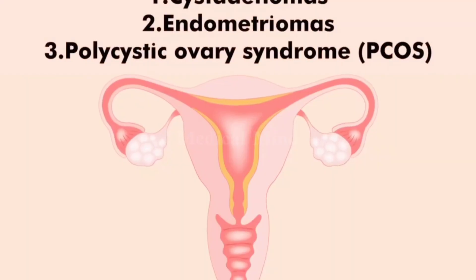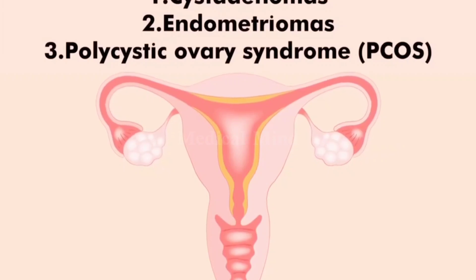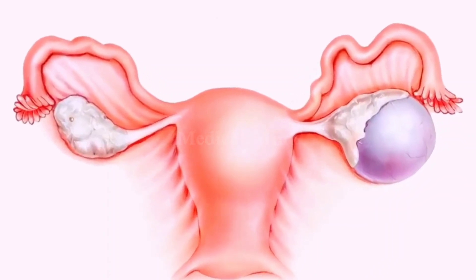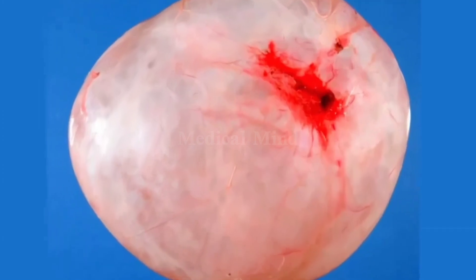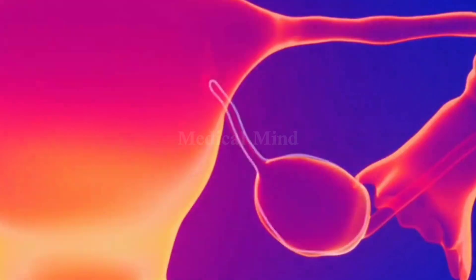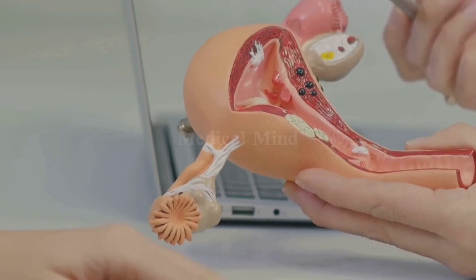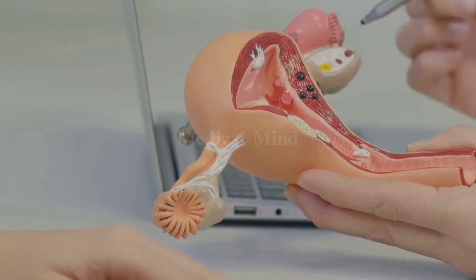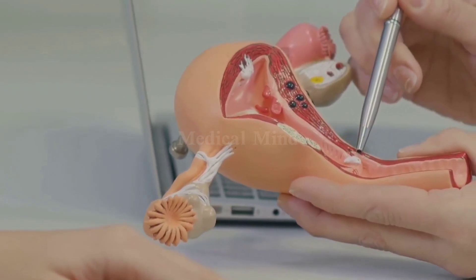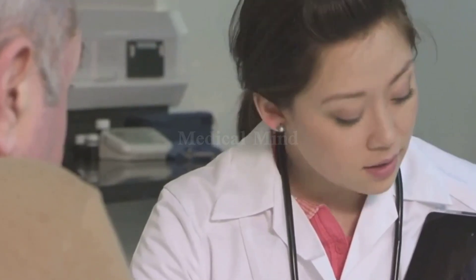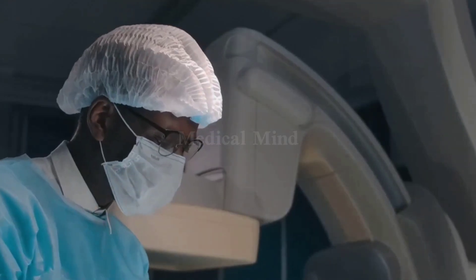The most common ovarian cysts are functional cysts, which form as part of your menstrual cycle. There are two main types: follicular cysts and corpus luteum cysts. Follicular cysts develop when a follicle doesn't release an egg and fills with fluid instead — these usually go away on their own. Corpus luteum cysts form after an egg is released, when the follicle seals and fluid builds up; again, these are usually harmless and resolve naturally.